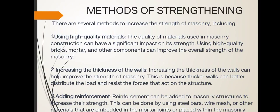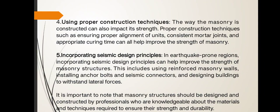Adding reinforcement: Reinforcement can be added to masonry structures to increase strength. This can be done by using steel bars, wire mesh, or other materials embedded in mortar joints or placed within the masonry. Using proper construction techniques: The way masonry is constructed can also impact its strength; proper construction techniques such as ensuring proper alignment of units, consistent masonry joints, and appropriate curing time can help improve the strength of masonry.